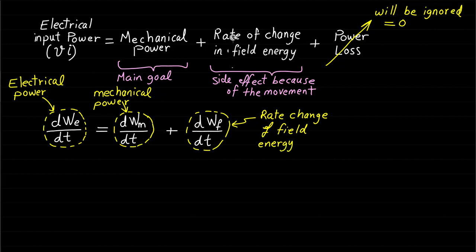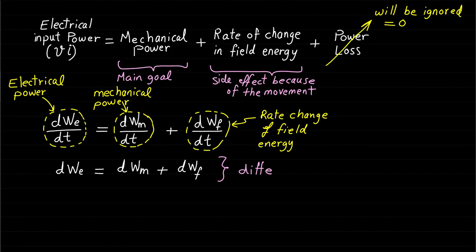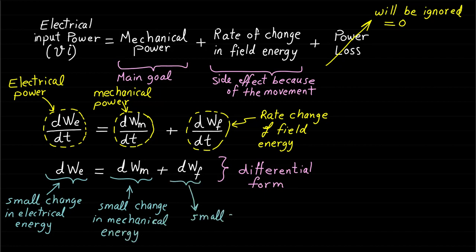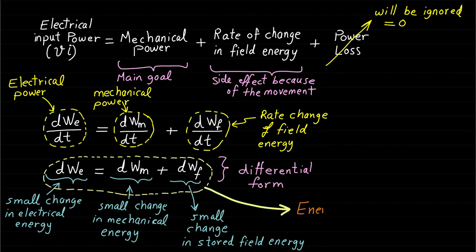This equation can also be represented in differential form. The differential symbol dwe represents the change in electrical energy. This equation represents the motoring operation, where a change or increment in electrical energy equals a change or increment in mechanical energy plus a change or increment in field or stored energy. This equation is also called the energy balance equation, and it will be used for developing the force and torque expressions.